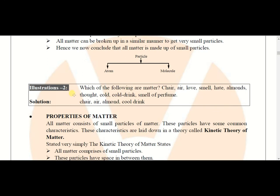Now a question: which of the following are matter? Things given are chair, air, love, smell, hate, almonds, thought, cold, cold drink, and smell of perfume. Chair is an object which has both mass and volume, so it is matter. Air also has mass and volume, so it is matter.